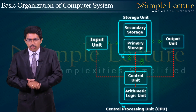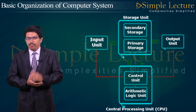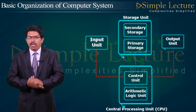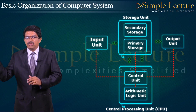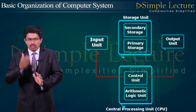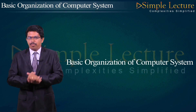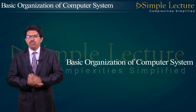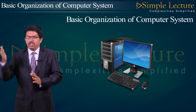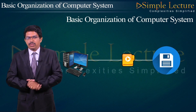Now we are going to discuss all five different types: input unit, central processing unit, control unit, arithmetic logic unit, registers, and storage unit. Generally, a computer is an electronic device which accepts the input, processes the data, and produces the result.